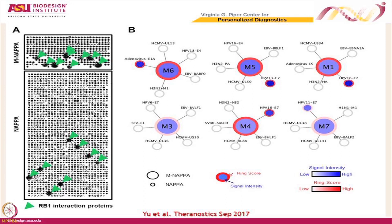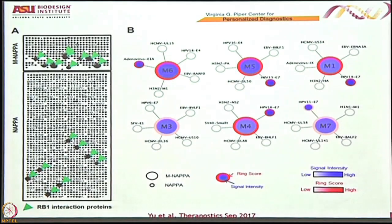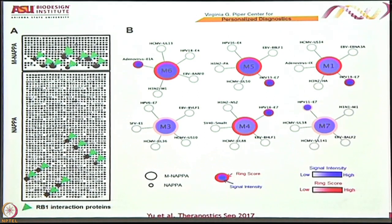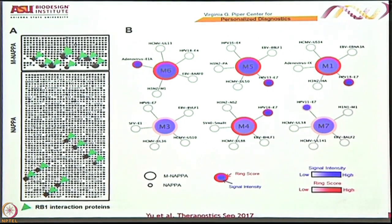What we ended up deciding to do was this kind of ball-and-stick model, where this ball is representative of the mixed spot and each of these individual circles represents the five proteins expressed in that spot. The color here means that we detected signal at the mixed spot, and color at any one of the individual spots means that when we tested it, it also gave a signal.